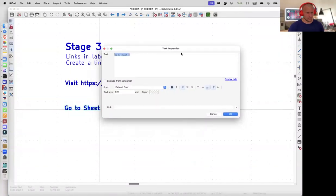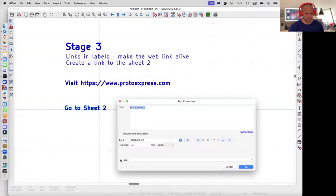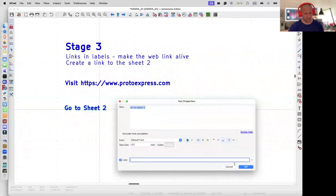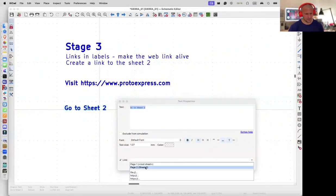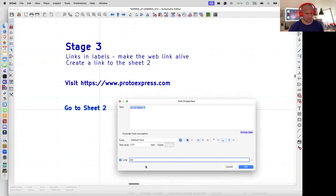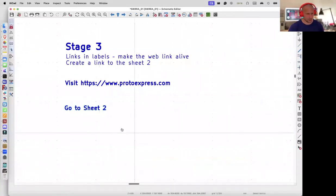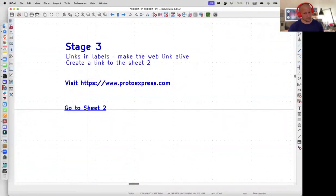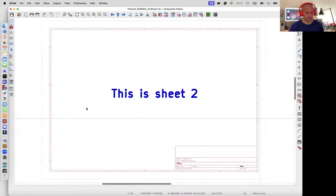I'm going to its properties. I'm checking the link checkbox. Then I can select that I want to go to sheet two. Now the link is active and I can be moved to sheet two. Let's see. Yeah, this is sheet two. It works.